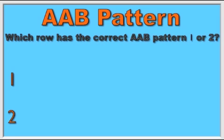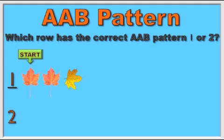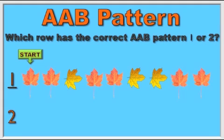For our next activity, let's use leaves. Let's start with row one: orange, orange, yellow. Orange, orange, yellow. Yellow, orange, orange. Did that make the AAB pattern? What do you think?